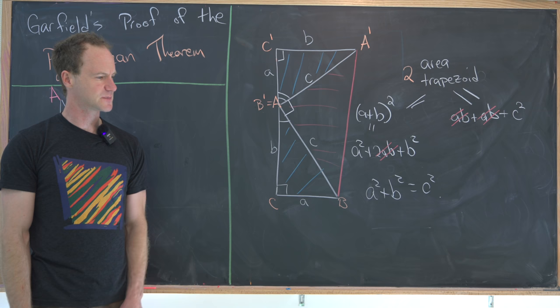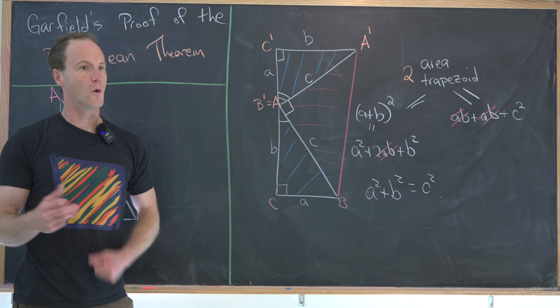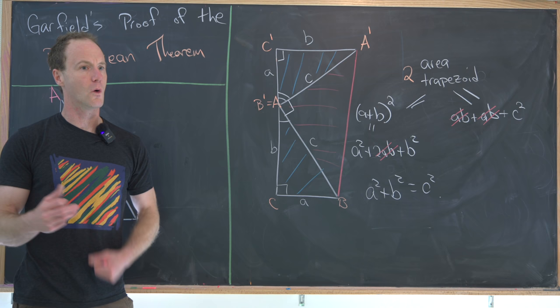So post in the comments — which of these proofs did you like better? Was Einstein's proof more aesthetically pleasing, or was Garfield's proof? Or maybe you prefer a totally different proof. That's a good place to stop.